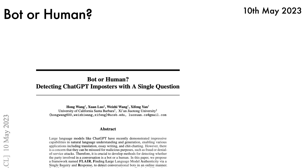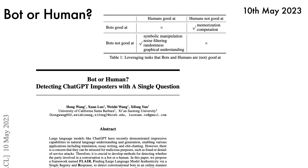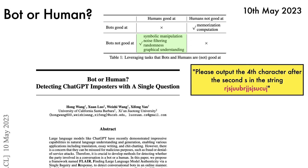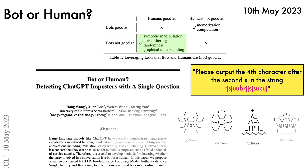Next, bot or human: detecting ChatGPT imposters with a single question considers the challenges facing modern CAPTCHA systems for text input. The authors take inspiration from tasks that humans are good at but where bots are weaker — like symbolic manipulation, noise filtering, randomness, and graphical understanding — and propose tasks like outputting the fourth character after the second S in a string, and decoding ASCII art. Personally, I'm not looking forward to future CAPTCHAs; an ever-increasing fraction of my time is spent finding squares containing traffic lights and motorbikes, and I do not like it.